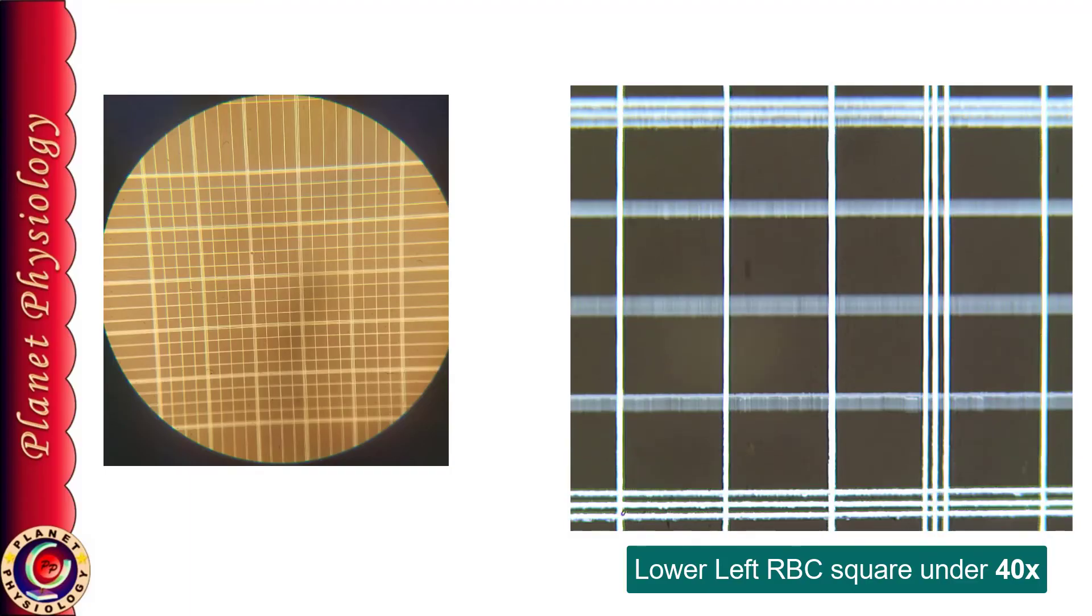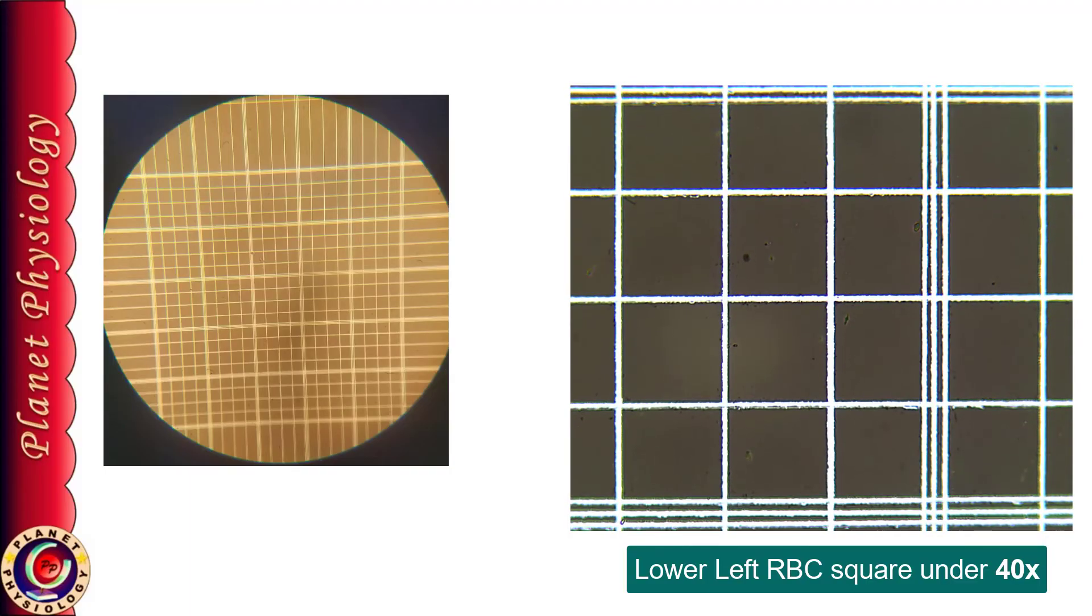So while moving just count the squares, 5th square is your corner square. So I am moving upwards.